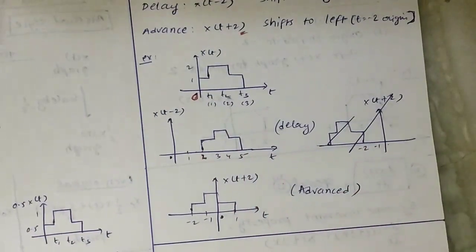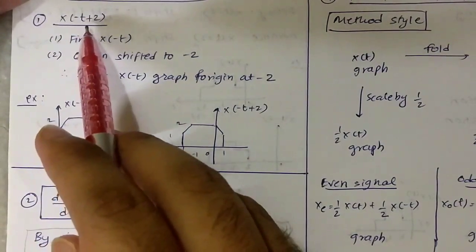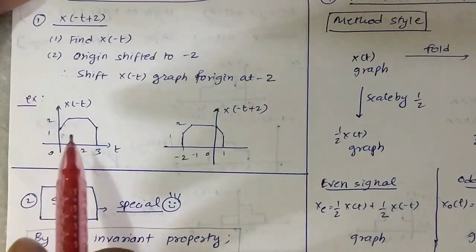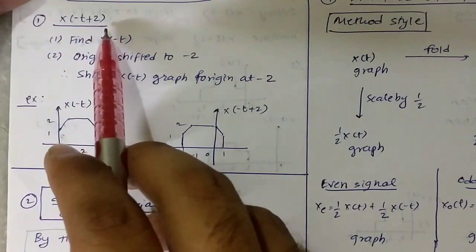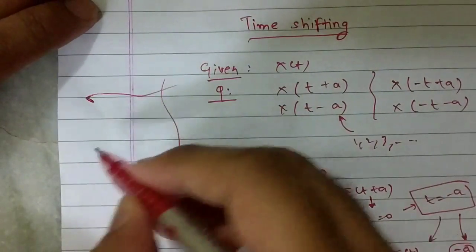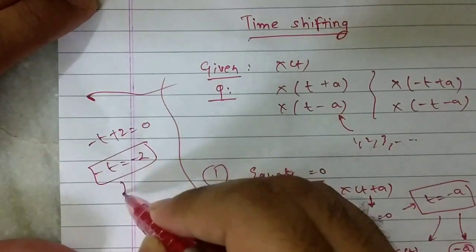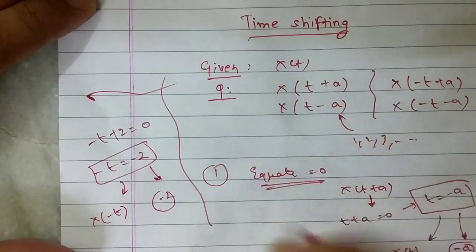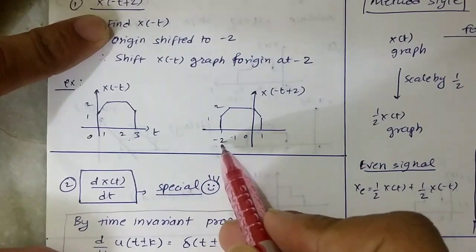Now the second variety: X(-t+a). In this example, X(-t+2) is the question. First step — equate to zero: -t+2 = 0, so -t = -2, meaning we draw the X(-t) graph and the origin should be at -2. The graph remains the same shape and the origin shifts from 0 to -2.